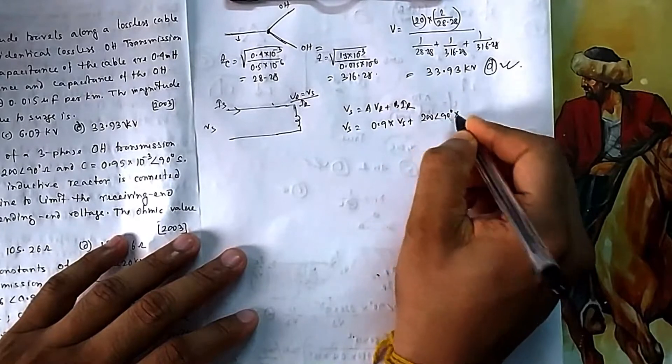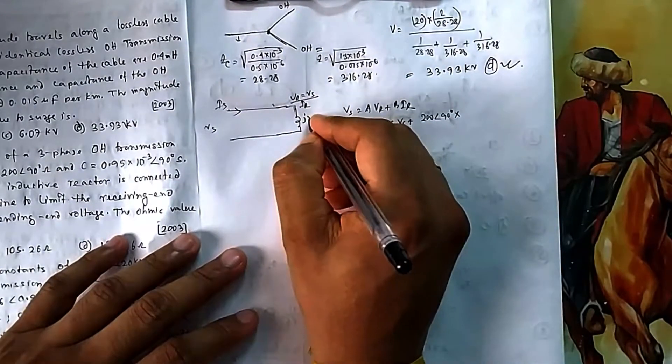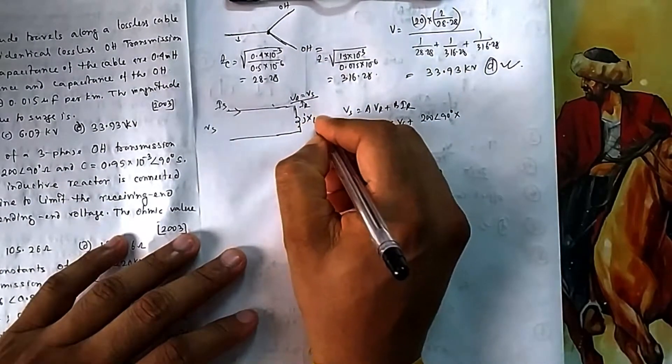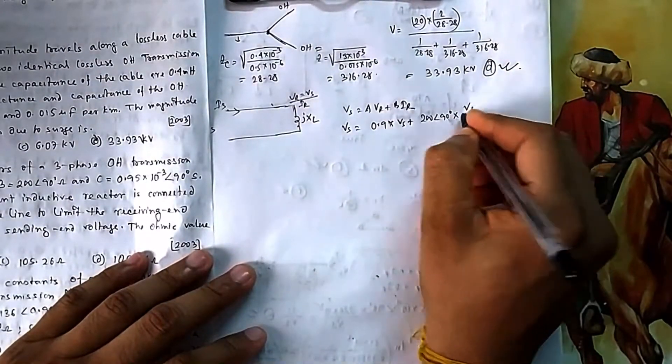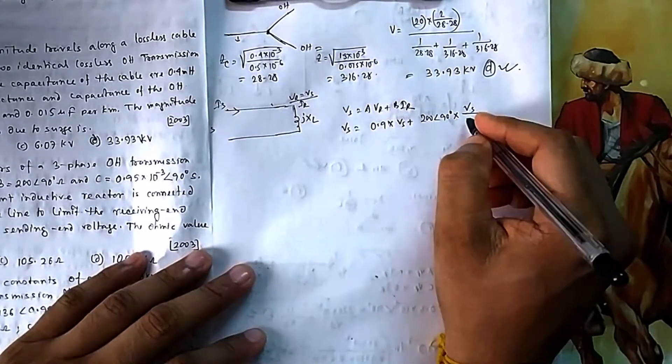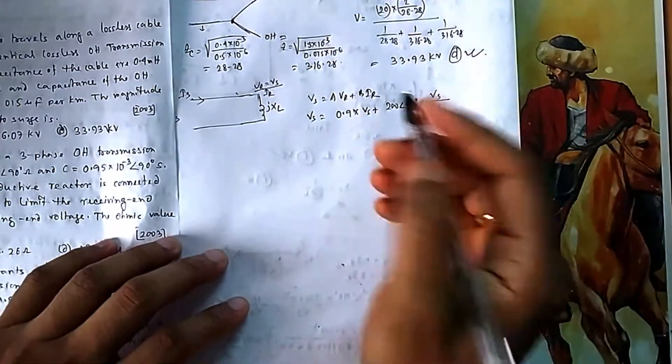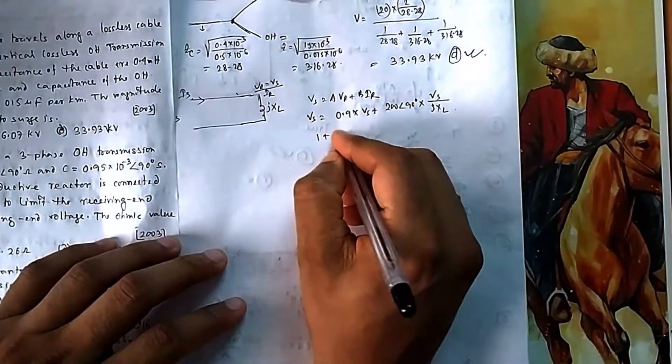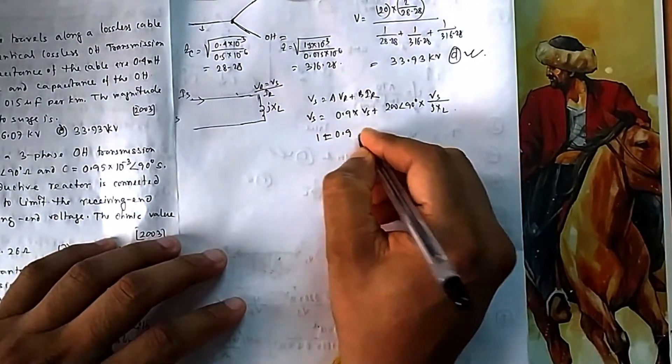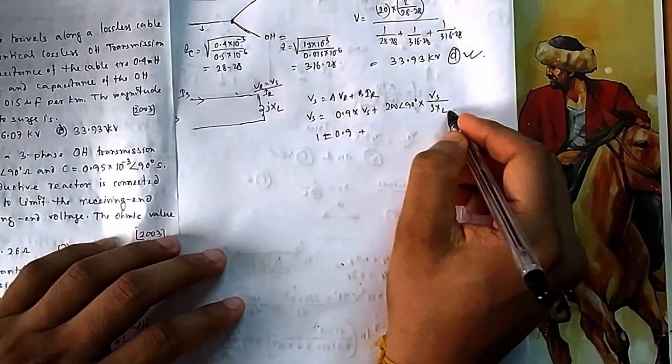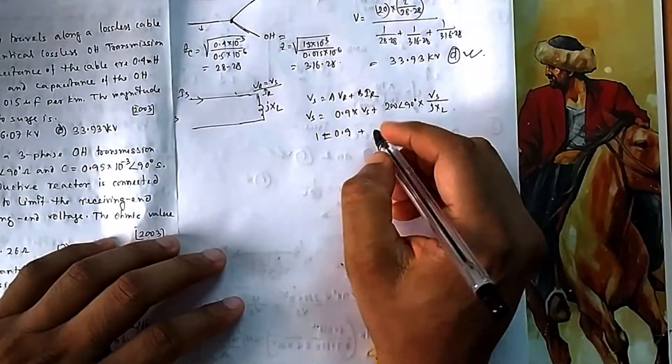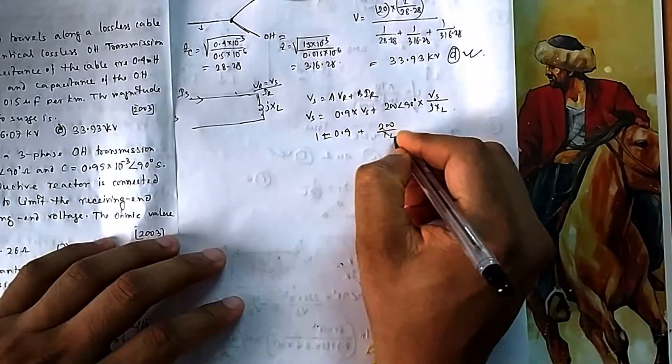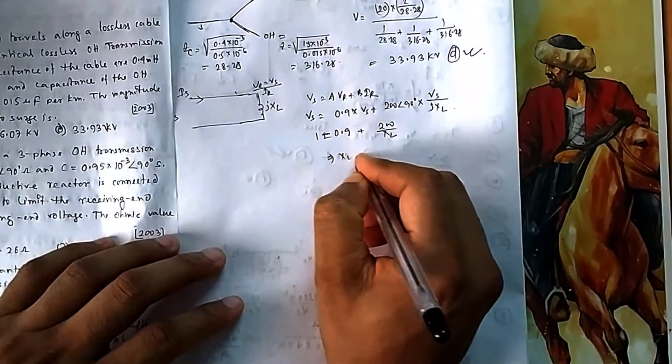You know the formula: Vs = AVr + BIr. Vs is given as 0.9 × Vr, B is 200 at 90°, and Ir = Vr/XL. For an inductive reactor, that is Vr divided by XL. Since Vr and Vs are equal, Vr cancels. Finally you are left with 1 = 0.9 + 200/XL. The 90° angles cancel, giving XL = 2000 ohms. That is option B.